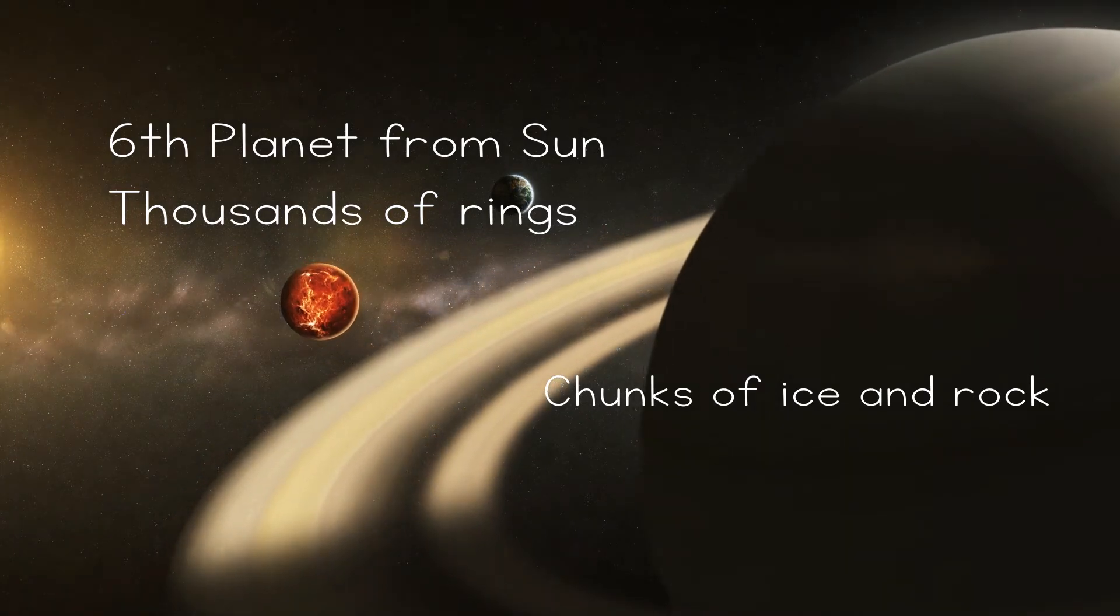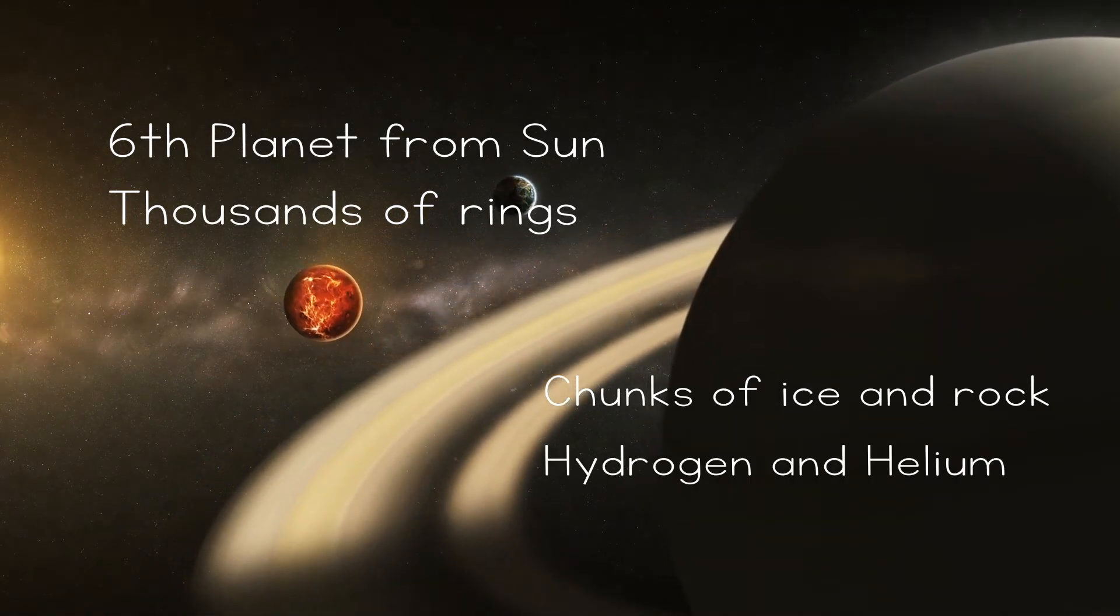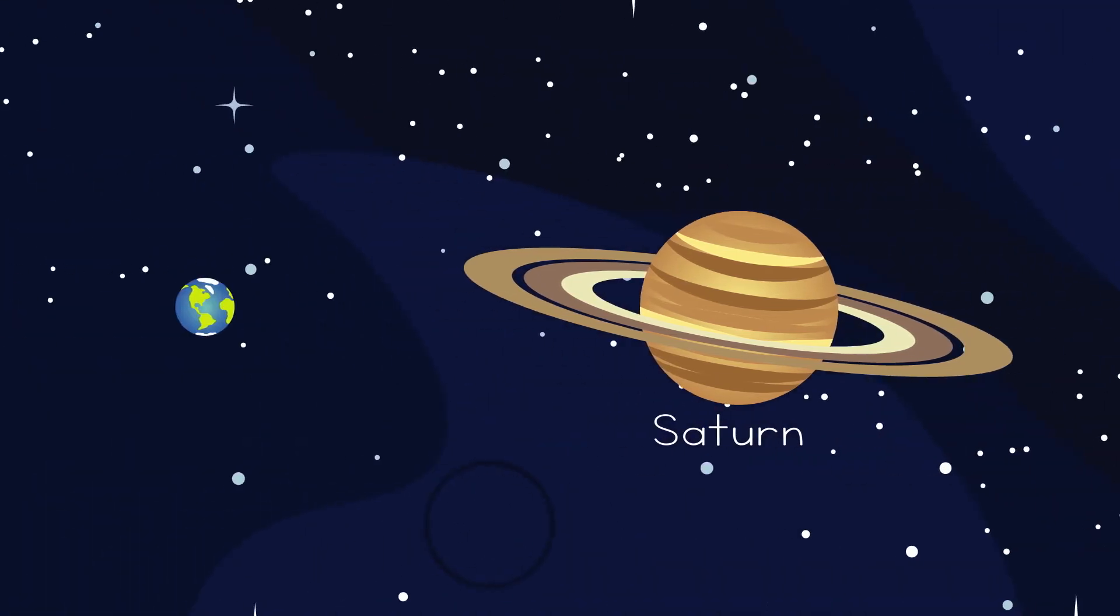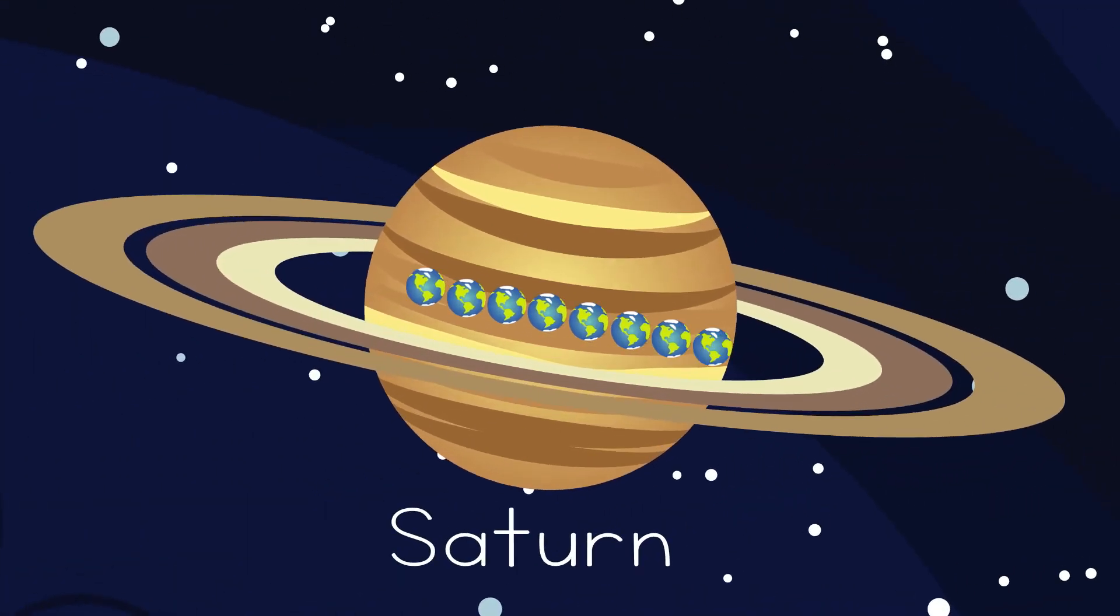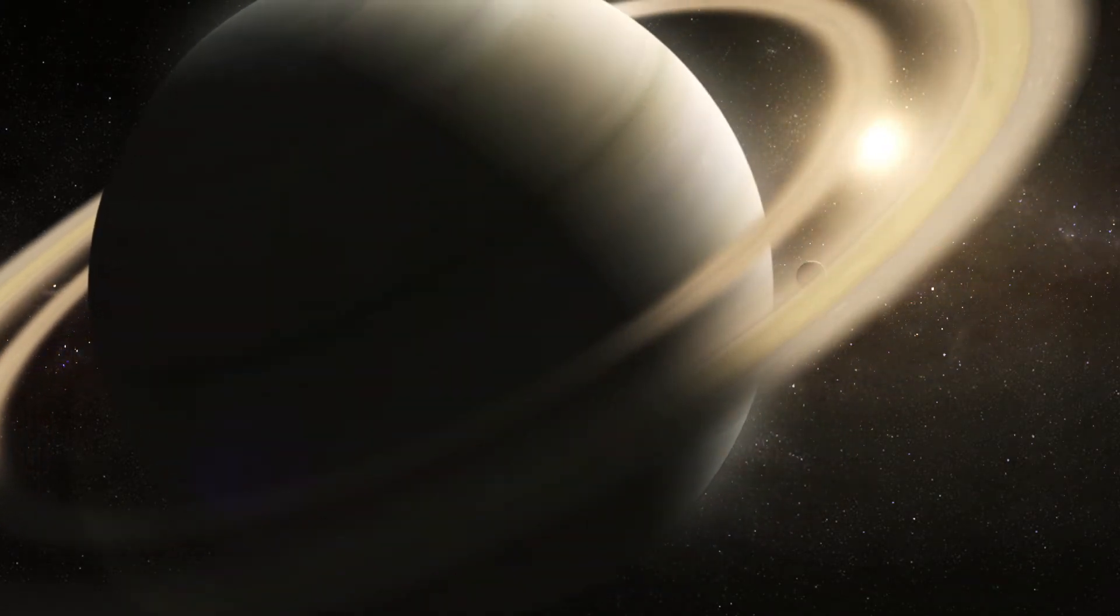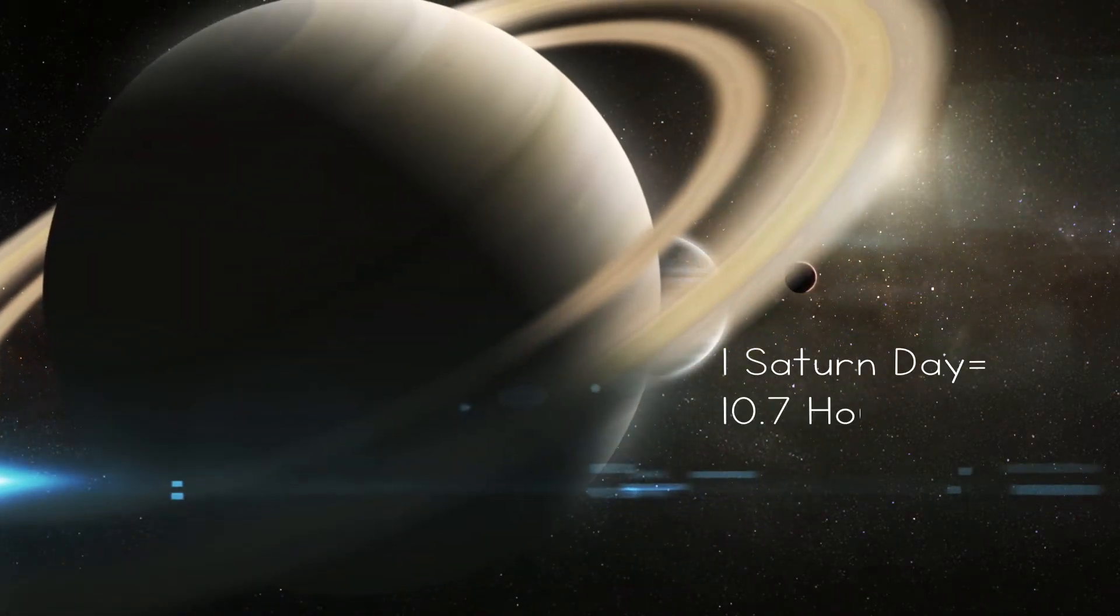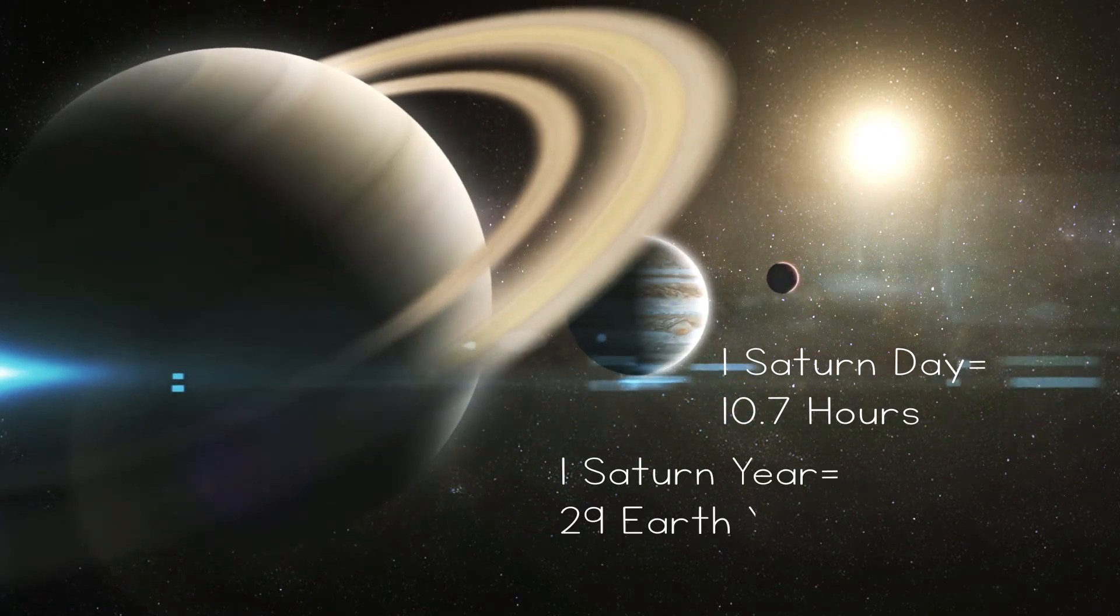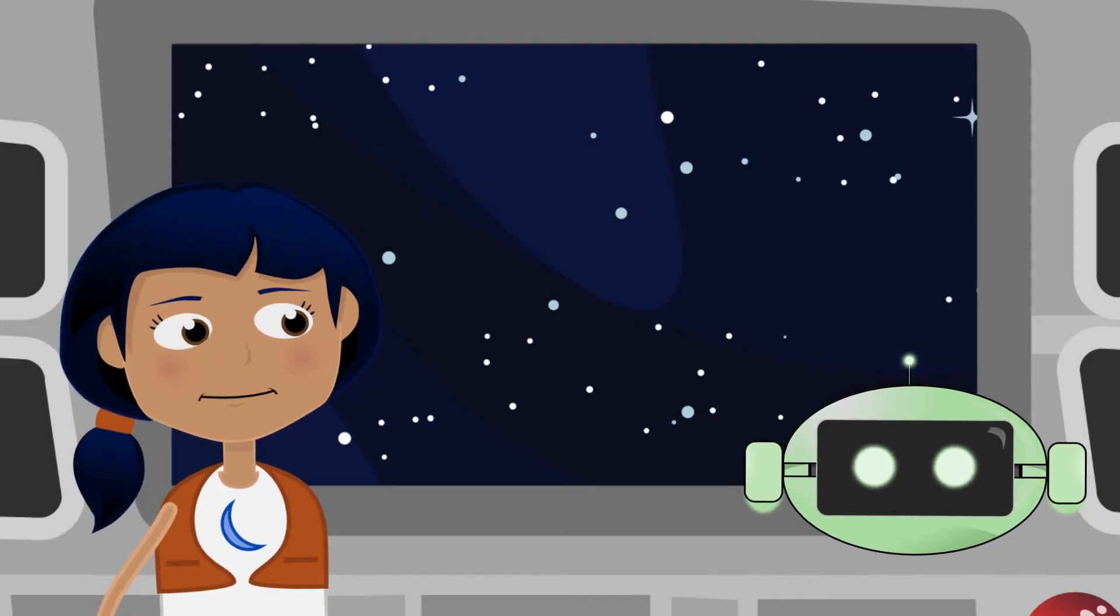Like Jupiter, Saturn is made up mostly of hydrogen and helium. It's not quite as large as Jupiter, but is still much larger than Earth. Nine Earths could fit across Saturn! Saturn rotates quickly. One Saturn day is about 10.7 hours. But one year on Saturn is 29 Earth years. These years are getting long.